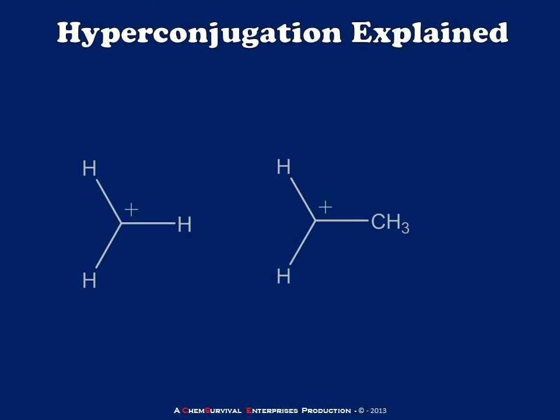So here I've drawn for you the methylcation and the ethylcation. And these two carbocations you're not really going to see in a genuine, bona fide reaction because they're just not stable enough. But they're the simplest examples that will allow me to demonstrate how hyperconjugation works. So let's set aside the fact that these are unreasonably unstable and just take a look at them right now anyway.